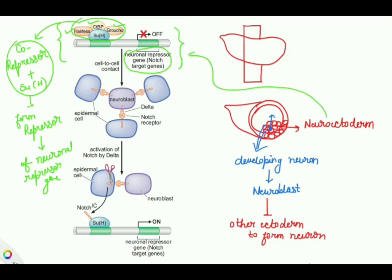As the name suggests, the neuronal repressor gene represses neuron formation; but when it is switched off, neuroblast formation can proceed. All neurogenic ectoderm cells initially have this neuronal repressor gene switched off. If it remains off for a long time without being switched on, the cell will become a neuroblast.